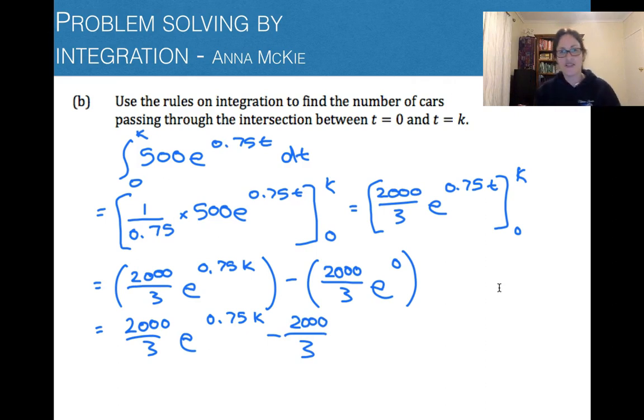Now, I know we need to use this in the next part. So you could leave it like that or tidy it up just a little bit. And there's a common factor here of this constant. So 2,000 on 3 times e to the power of 0.75k. Make sure you take out the correct common factor and you're left with negative 1. So that's the answer for here.